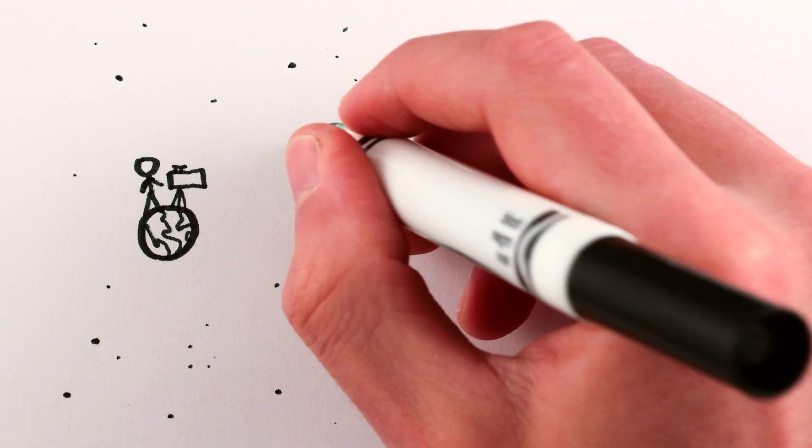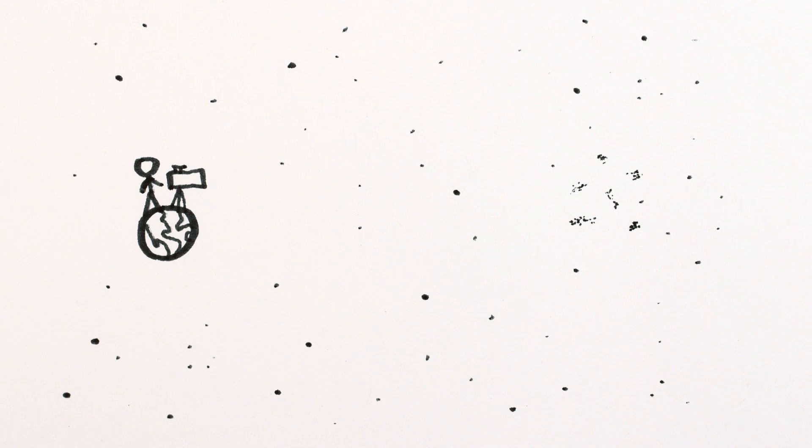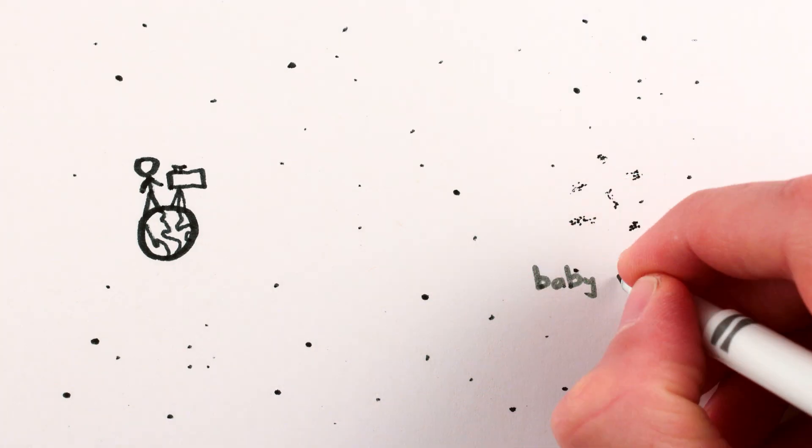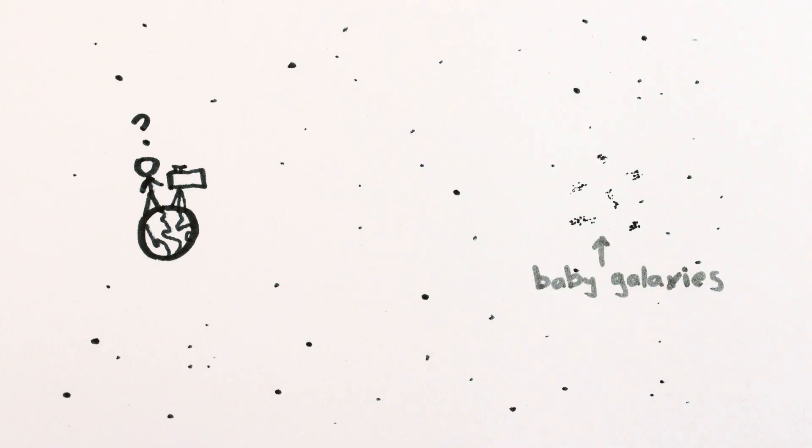However, the very first galaxies to ever form were so small and dim that we don't have nearly as good an idea of how baby galaxies are born as we do about how they behave and interact later in life.